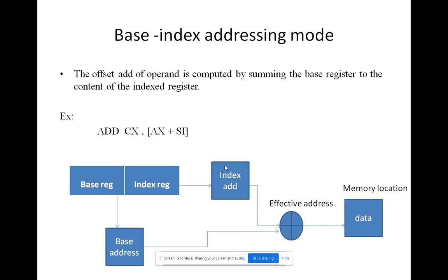Next, based index addressing mode: the offset address of the operand is determined by summing the base register with the content of the index register. For example, ADD CX, [BX+SI] — here, SI provides the index, which is added to the BX register to give the memory location, and that data is moved to the AX register.